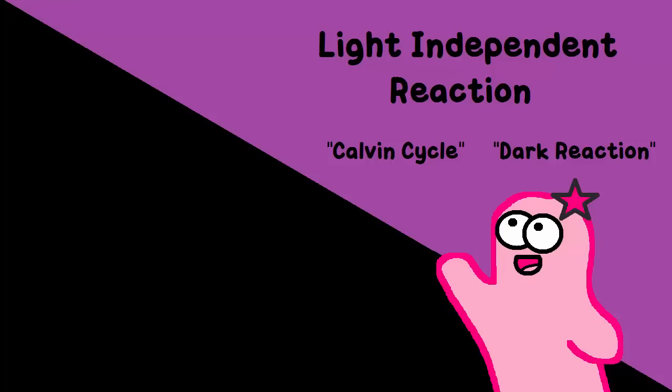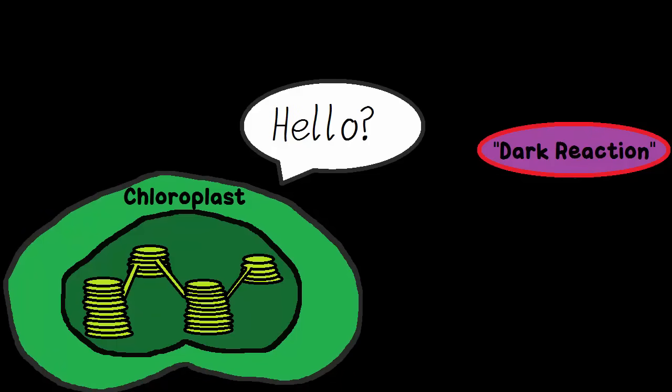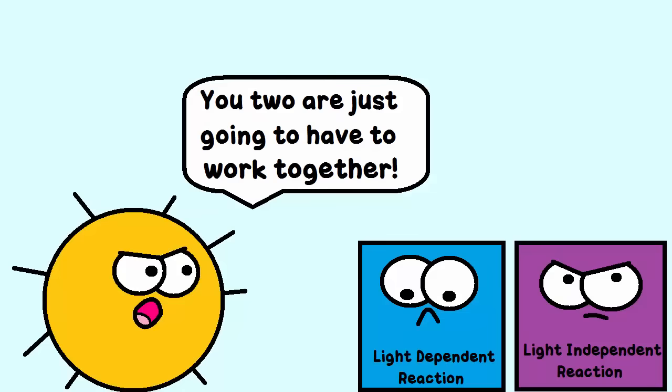Well, that's the next step, the light-independent reaction. The light-independent reaction also occurs in the chloroplast, but the name is misleading. It doesn't happen in the dark. It needs items from the light-dependent reaction, so they happen at the same time.